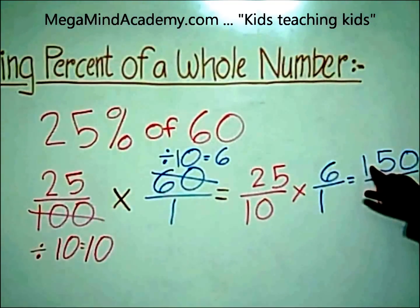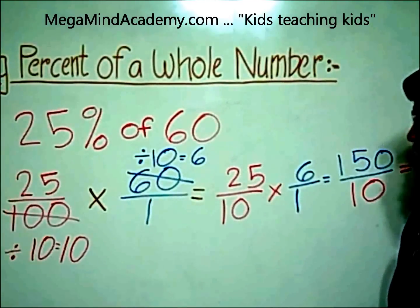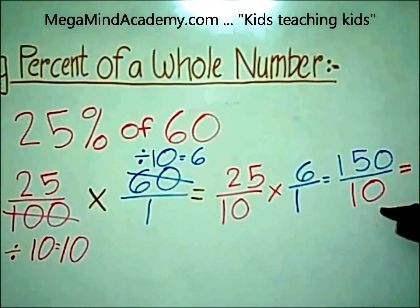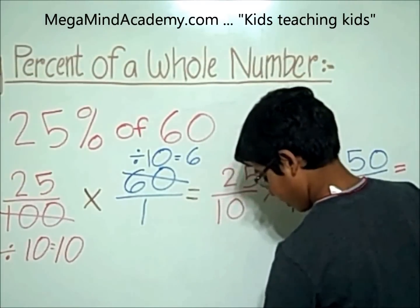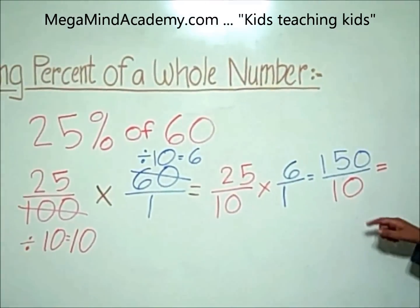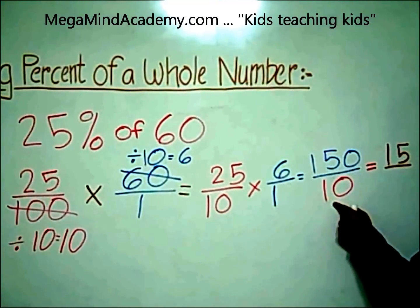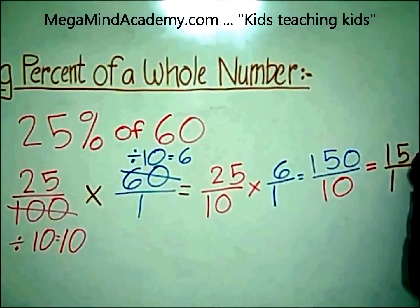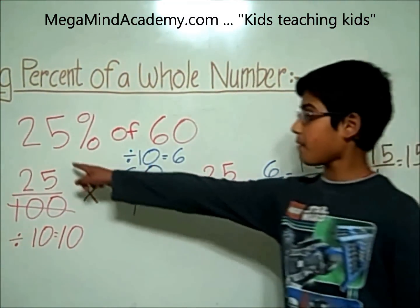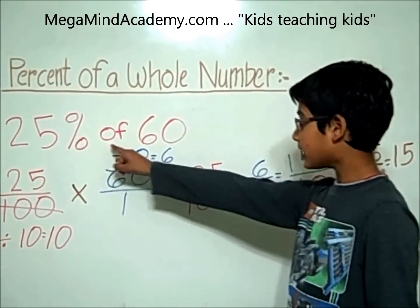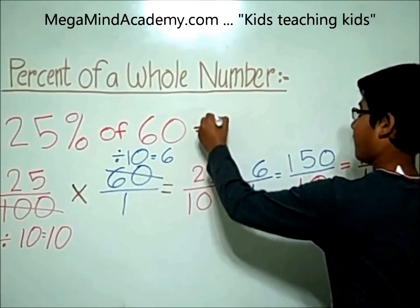Now, as Step 4 says, we have to simplify the fraction. 150 and 10 are both divisible by 10. So 150 divided by 10 is 15, and 10 divided by 10 is 1, which equals 15. So 25% of 60 is equal to 15.